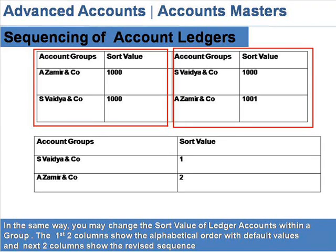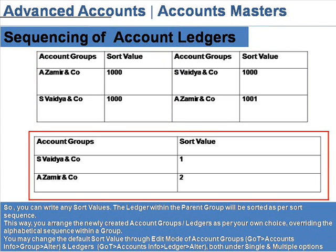The appearance of account ledgers is as per the sort value, that is, the position index value. In the same way, you may change the sort value of ledger accounts within a group. The first two columns show the alphabetical order with default values, and the next two columns show the revised sequence. However, you can write any sort values, and the ledger within the parent group will be sorted as per the sort sequence.